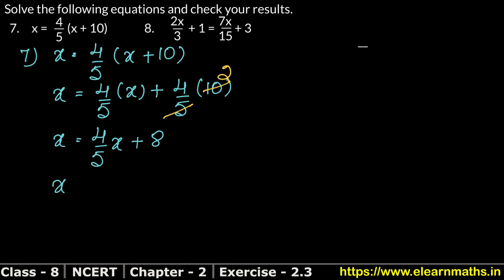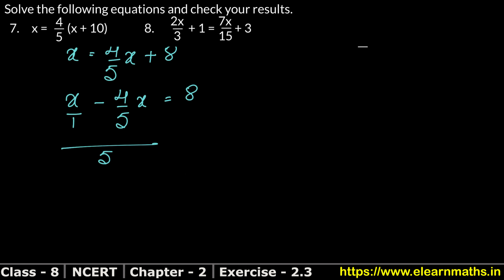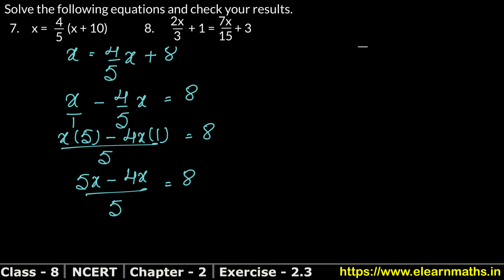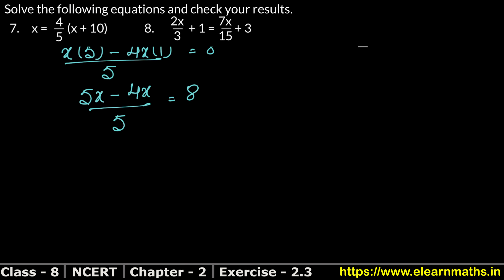Now, bring x values to one side. Since 4 upon 5x is on the left side, it becomes minus, equals 8. LCM is needed here, so LCM of 5 and 1 is 5. That gives us 5x minus 4x upon 5 equals 8. So x upon 5 equals 8.